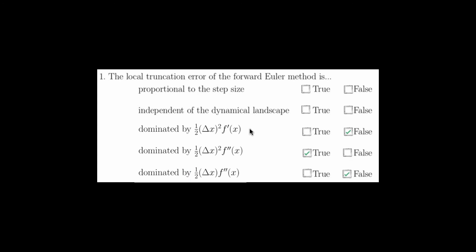The local truncation error of the forward Euler method is dependent on the dynamical landscape. We can see this by the fact that there's this f' term, so this question is false. And the local truncation error of the forward Euler method is not proportional to the step size — it's proportional to the step size squared, as we can see right here. So this question is also false.